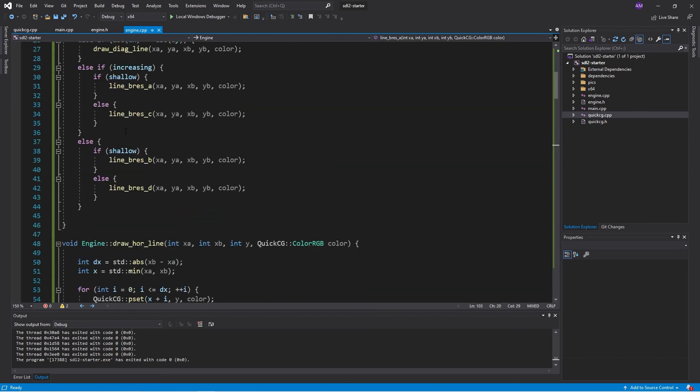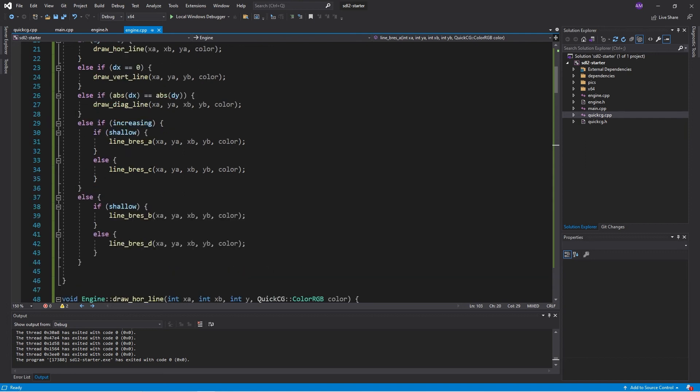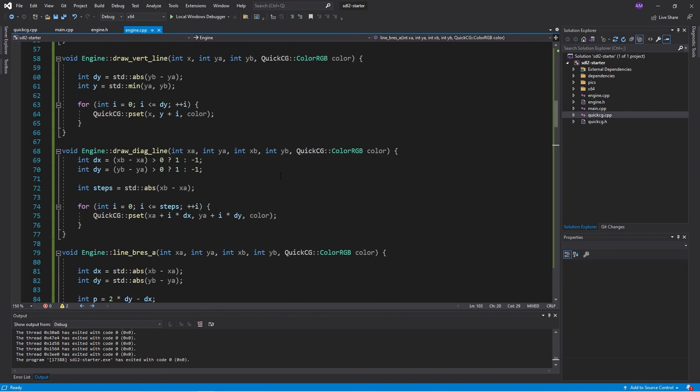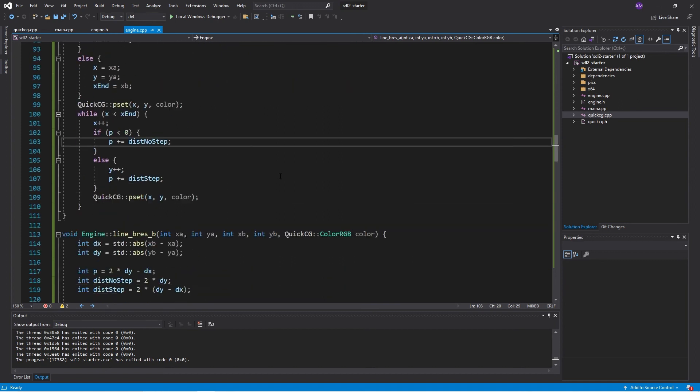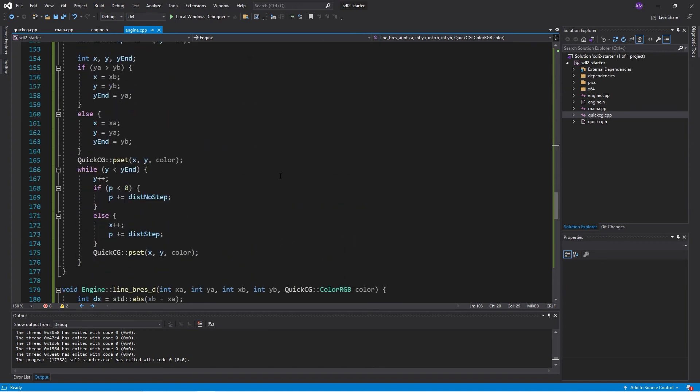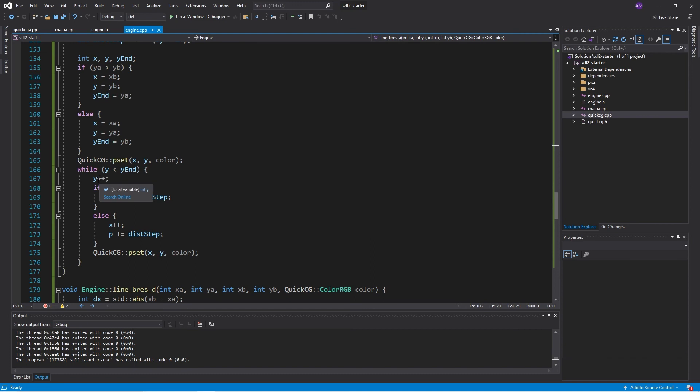If we're not shallow, if our dy is bigger than our dx, then what we do instead is we step y across and then we choose whether to change x or not. If we go down to the c case, we have a positive slope and a positive steep slope. Y is stepping across, y is increasing, and then sometimes x is increasing.